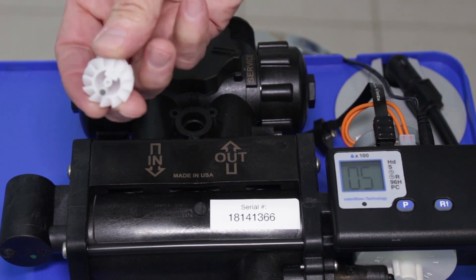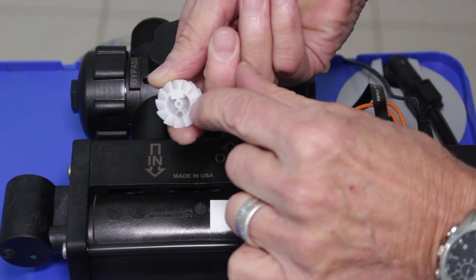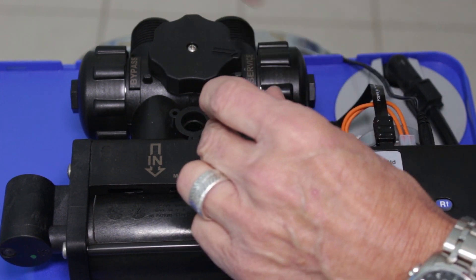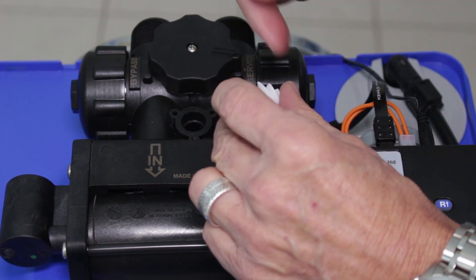This is the turbine here. It has a small magnet embedded into it. As it turns, it turns past this flow sensor and that's what indicates flow.